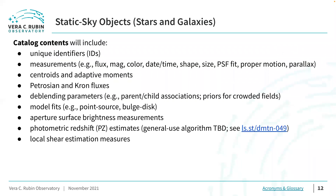The catalogs will include unique identifiers; measurements like flux, magnitude, colors, and shape and size parameters; centroid and adaptive moments; Petrosian and Kron fluxes; de-blending parameters such as parent-child associations; point source and bulge-disk model fits; aperture surface brightness measurements; photometric redshift estimates; and local shear estimation measures.